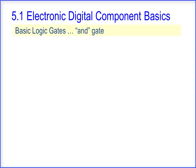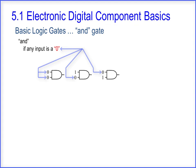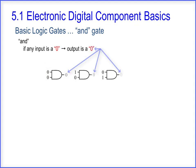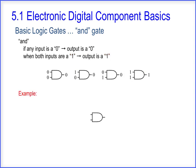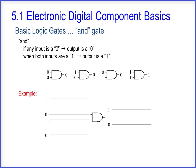With an AND gate, if any input is a 0, the output is a 0. When both inputs are a 1, the output is a 1.